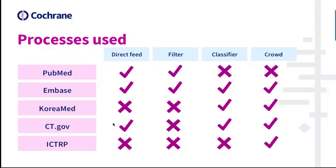The remaining records are then sent to Cochrane Crowd for manual screening. With ClinicalTrials.gov we use a machine learning classifier specifically developed for CT.gov, and records that get above a certain score are sent directly to CENTRAL while the rest are screened by Cochrane Crowd. With ICTRP we harvest all newly added records each month, remove the CT.gov records as they're handled by that workflow, and then send the remaining records to Cochrane Crowd for manual screening.